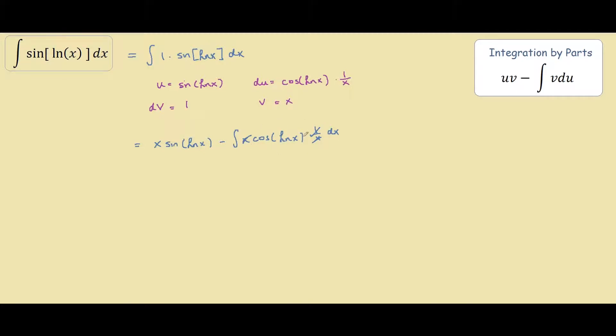To solve this second integral we're going to be using integration by parts again. So we actually have another 1 over here, so u equals cosine of ln of x. Therefore du equals negative sine of ln of x times 1 over x.